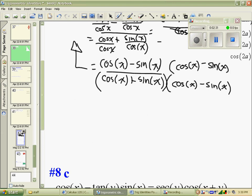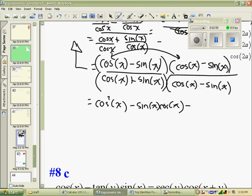cos minus sign on top and bottom when we multiply. The numerator will foil out. You will get cos squared of x. Outside is a minus sin x cos x. Inside is the same thing. And the last is sine squared, and it's positive.